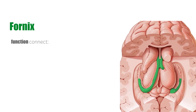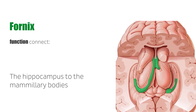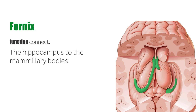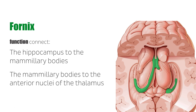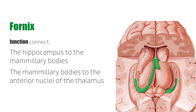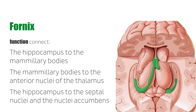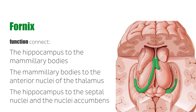The primary function of the fornix is to connect the hippocampus to the mammillary bodies of the hypothalamus, the mammillary bodies to the anterior nuclei of the thalamus, and the hippocampus to the septal nuclei and the nucleus accumbens.